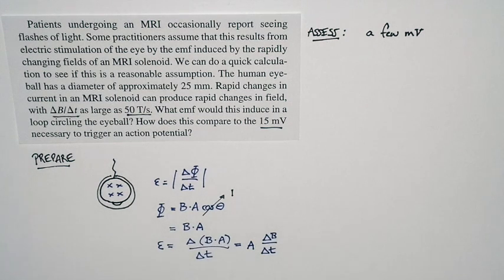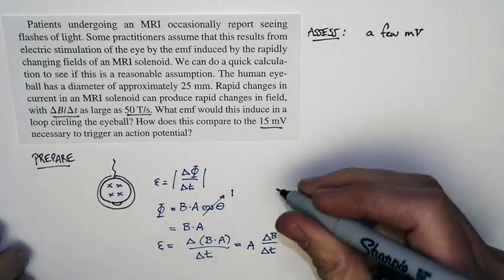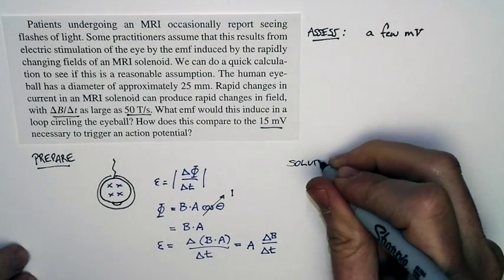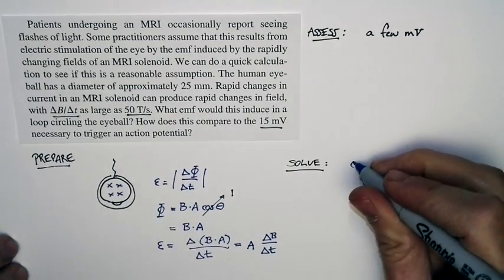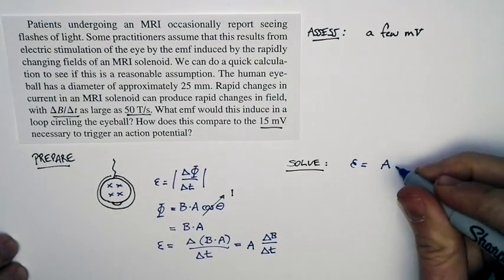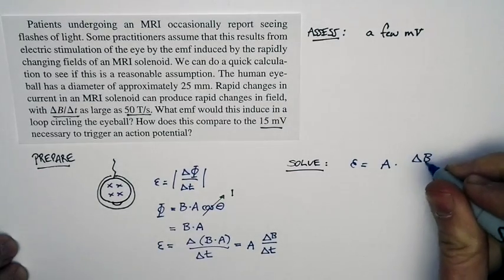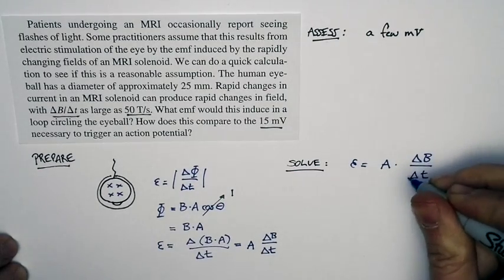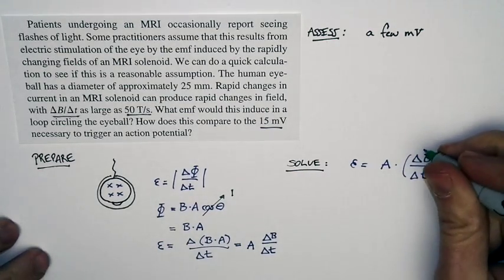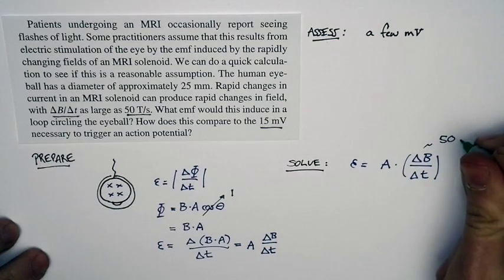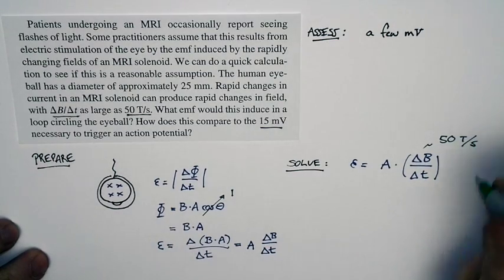So let's go ahead and set up our solution. Our solution is this. The EMF is equal to the area times delta B over delta T. Well, delta B over delta T, that's the rate of change of the magnetic field. And we're told in the problem statement that that's 50 teslas per second.